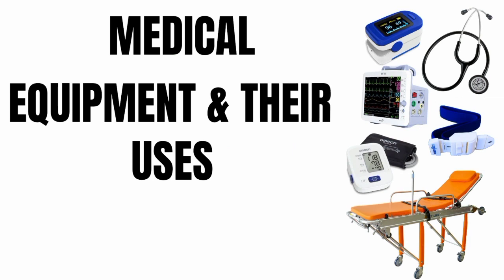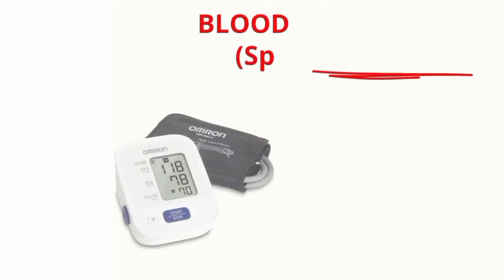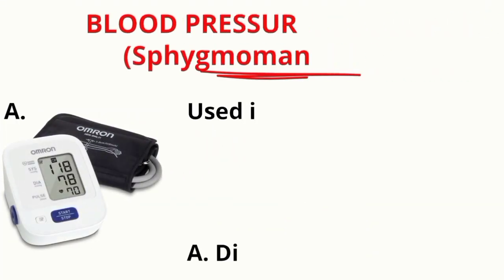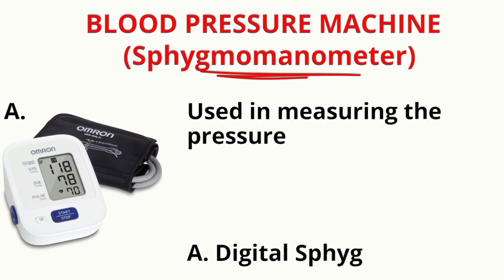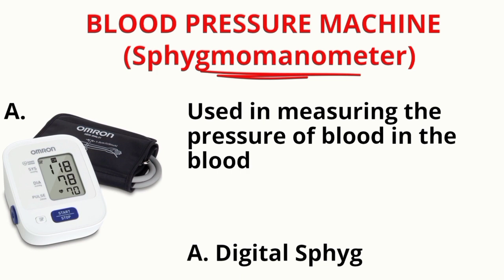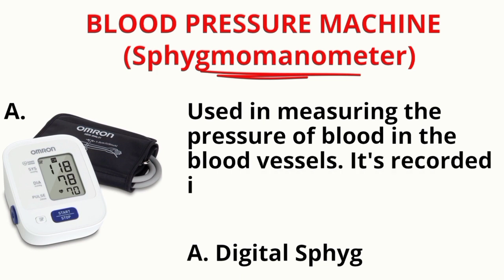Medical equipment and their uses. Blood pressure machine, also known as sphygmomanometer. It's used in measuring the pressure of blood in the blood vessels. It's recorded in millimeters of mercury.